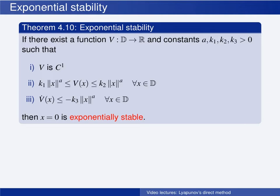Note that, as in previous examples, the choice of domain d does not only depend on whether the system vector function is well defined there, but we may also choose to further restrict d to a smaller domain where conditions 2 and 3 are satisfied. If all three conditions are satisfied for some domain d about the origin, then theorem 4.10 gives that the origin is exponentially stable. This theorem is known as the Babashin-Krasovsky theorem, but we will just call it the Lyapunov theorem for exponential stability.